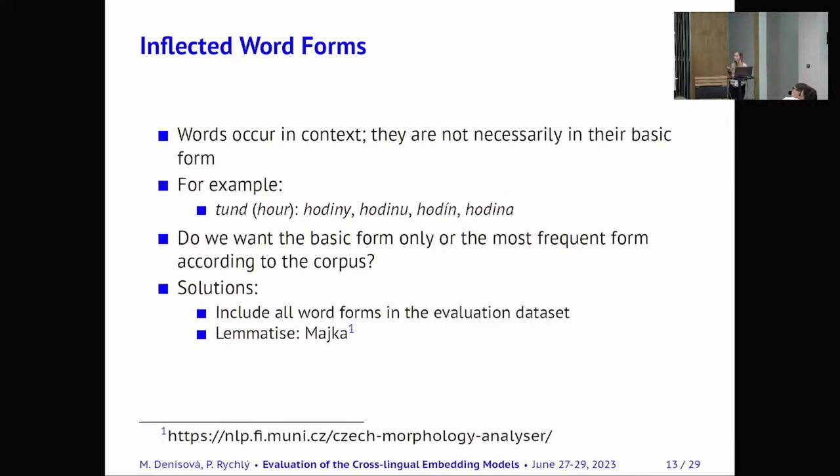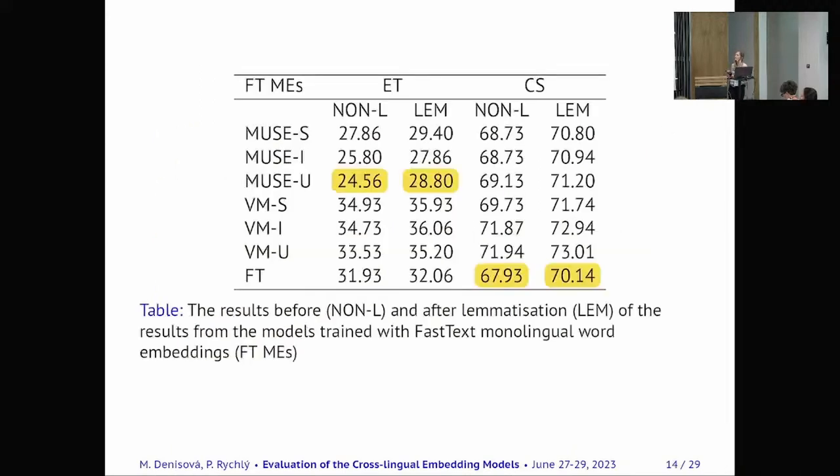Also the another trait of the evaluation dataset were inflected word forms and words occur in the context so they are not necessarily in the basic form in the monolingual word. So for example when we search for word tund which is an hour in Slovak language which it has various forms which only the last one word is in its basic form. And when we have in the evaluation dataset only tund equals hodina then it will mark all other word forms as incorrect but they are actually correct they are just not in the basic form. So our solution was to either include all the word forms in the evaluation dataset which is very time consuming or we can lemmatize the results and then we can see that the result changes and it even increases a bit.